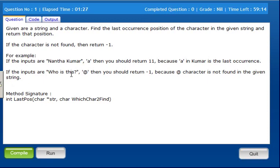If the inputs are 'who is this' and '@' symbol, '@' symbol is not present, so we have to return minus one.